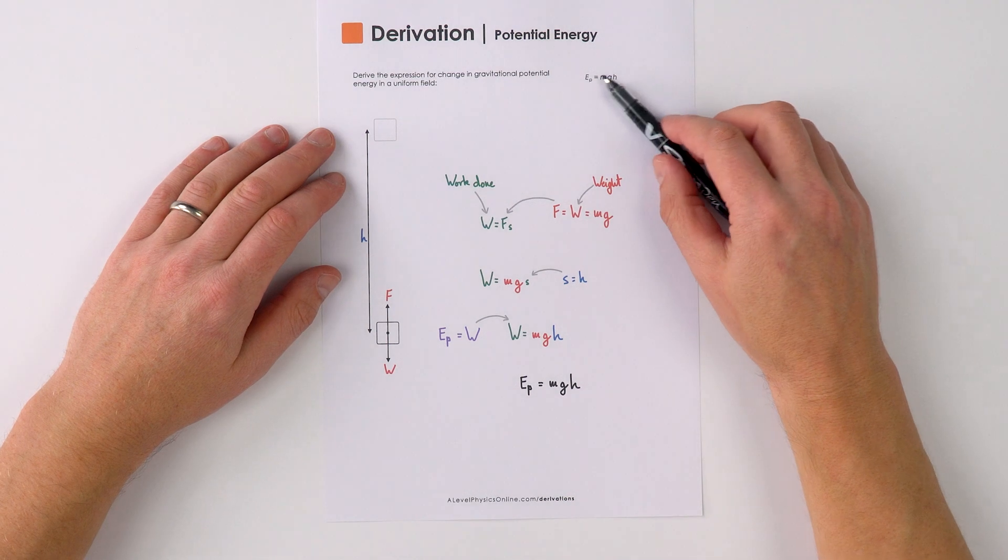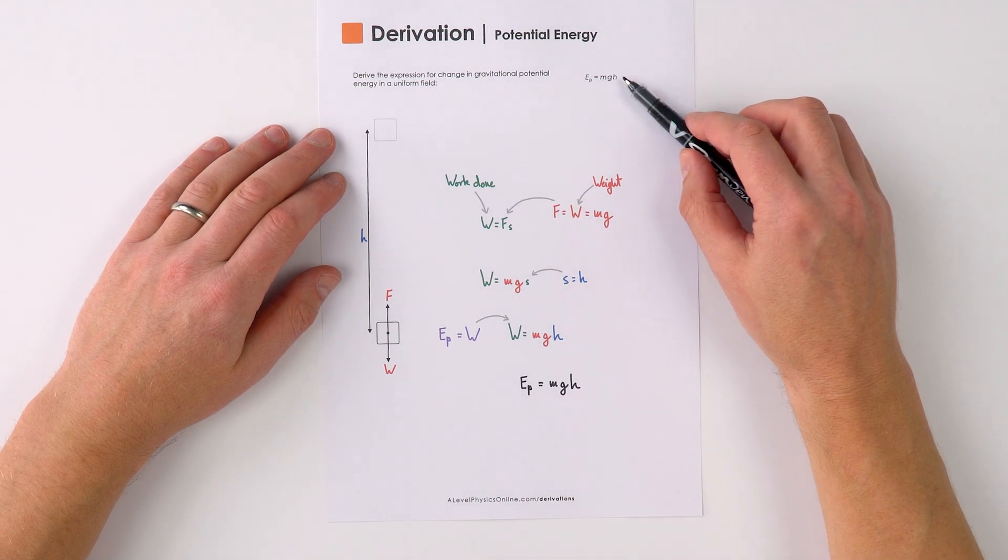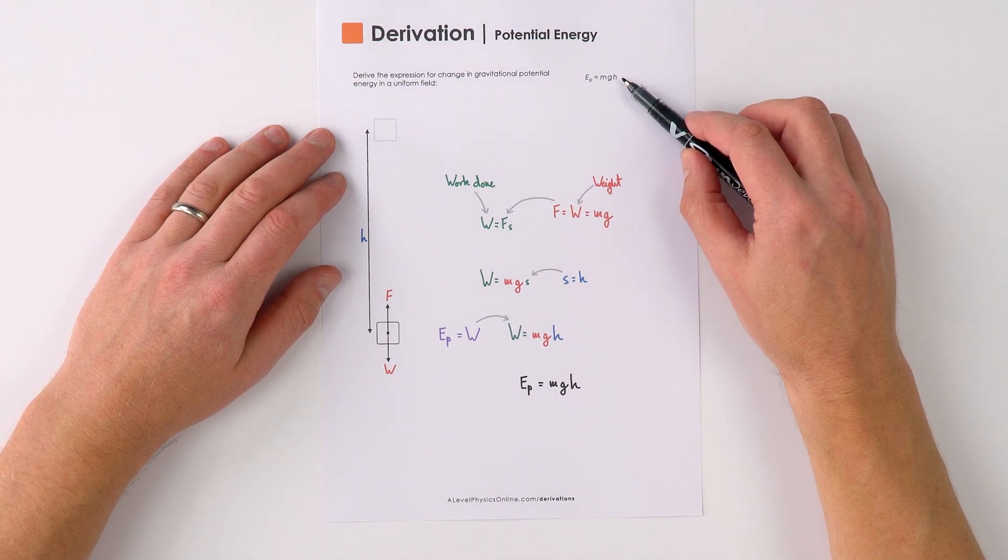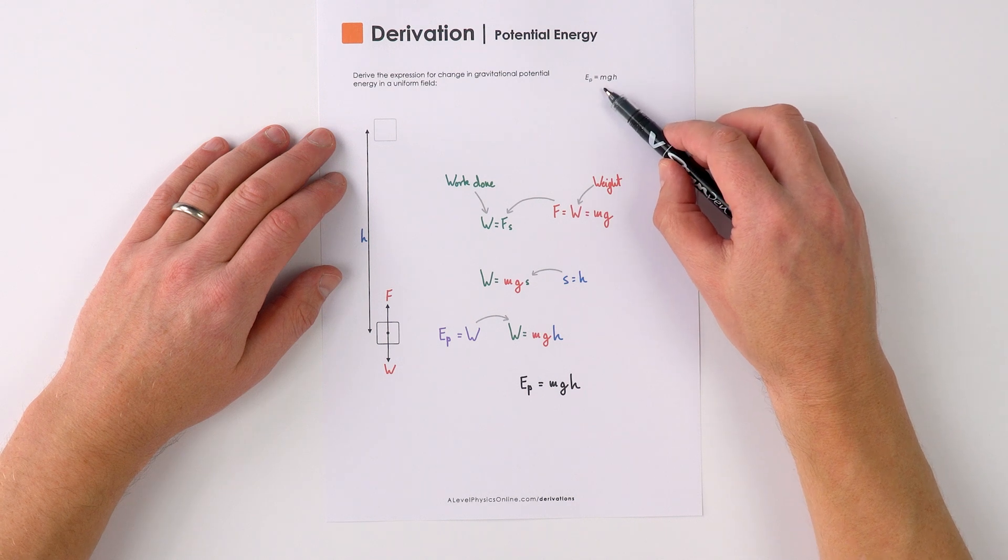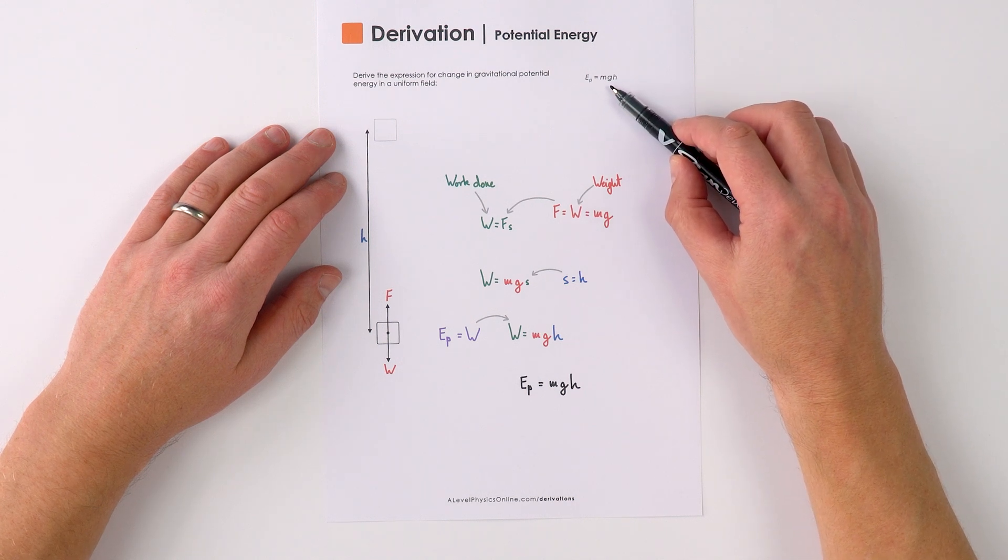This is a quick derivation looking at the gain in potential energy as an object moves through a height h. This is in a uniform field where the value of g is going to stay constant.